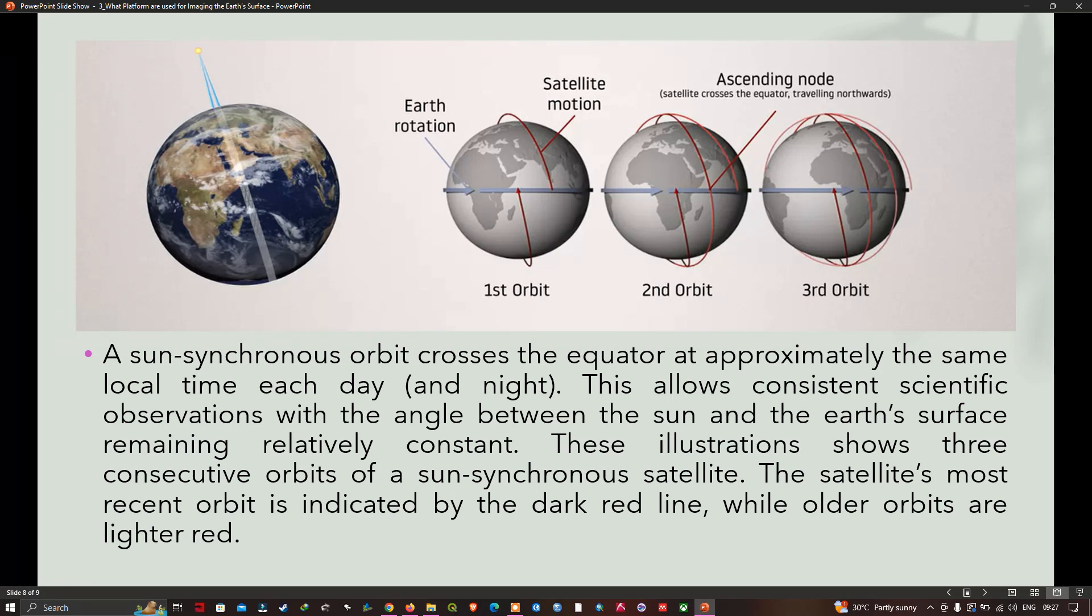You can visualize it from here. First, in the ascending node, the satellite crosses the equator traveling northwards. It crosses the Indian Ocean. The next orbit it is at central Africa. The third orbit is over the Atlantic Ocean. So the first orbit is over the Indian Ocean, the second orbit is over central Africa, and the third orbit is over the Atlantic Ocean just off the African coast. Note that it is not the orbit of the satellite itself that moves, but the rotation of the earth underneath the orbit.